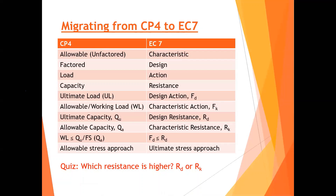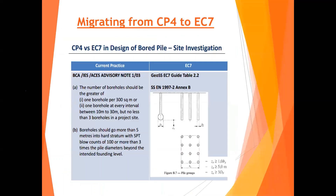Which resistance is higher — Rd or Rk? Remember: K stands for characteristic and D stands for design. The characteristic resistance Rk is higher than the design resistance Rd, because you factor down the characteristic resistance to get the design resistance. The EC7 and CP4 comparison table — prepared during the migration to EC7 — shows BCA requirements for soil investigation. For buildings more than 30 stories, the full requirements apply; for less than 30 stories down to 10 stories, there is a scaled-down requirement, but this is generally good practice.